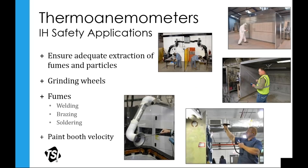Moving to industrial hygiene applications: industrial hygiene managers focus on safety and documentation — making sure workers have appropriate respirators, masks, or filtration when working with grinding wheels and similar equipment. The 9565 thermoanemometer is a useful device for many different applications including snorkel exhaust, paint booths, grinding wheels, and so on. It's a very versatile instrument that handles both test-and-balance applications and hygiene safety applications.